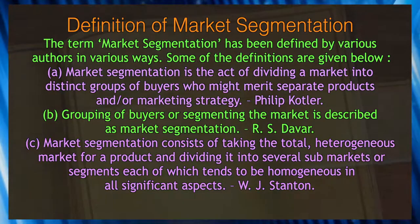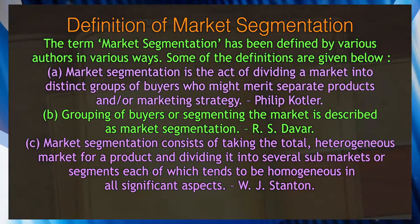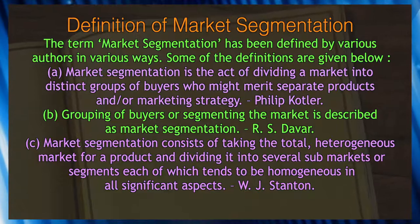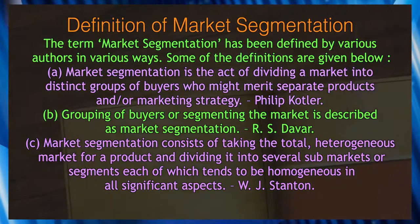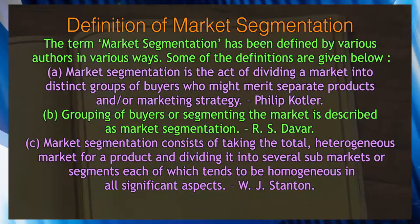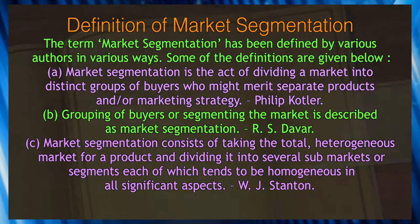As per W.J. Stanton, market segmentation consists of taking the total heterogeneous market for a product and dividing it into several sub-markets or sub-homogeneous segments, each of which tends to be homogeneous in all significant aspects. So market segmentation means grouping customers by homogeneous characteristics.